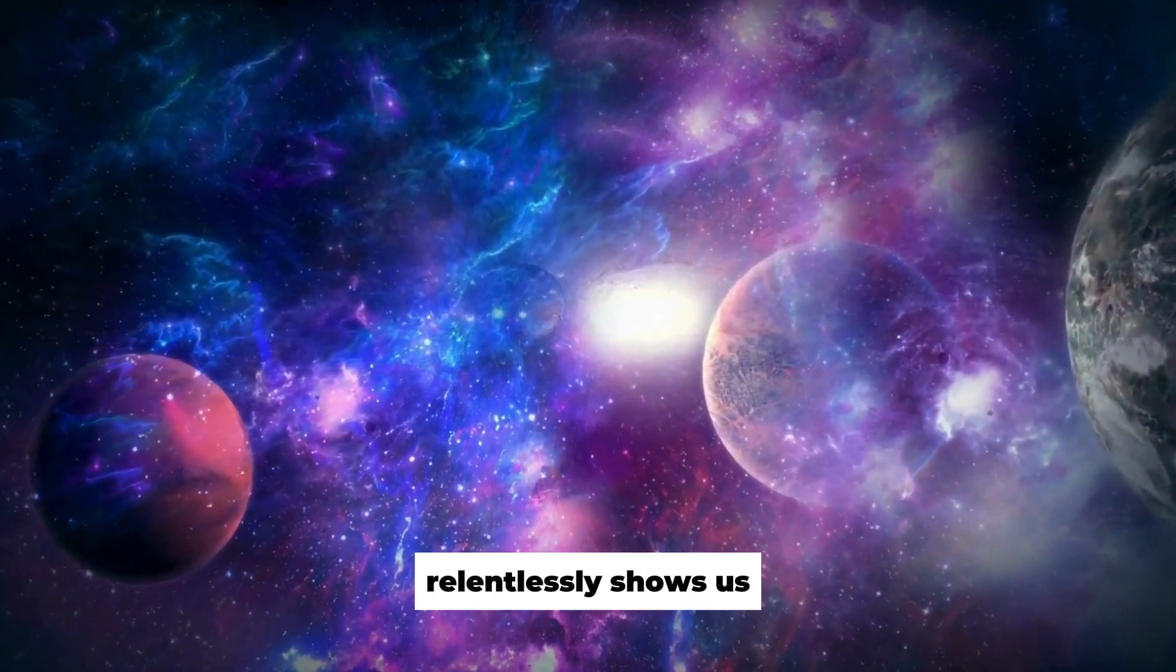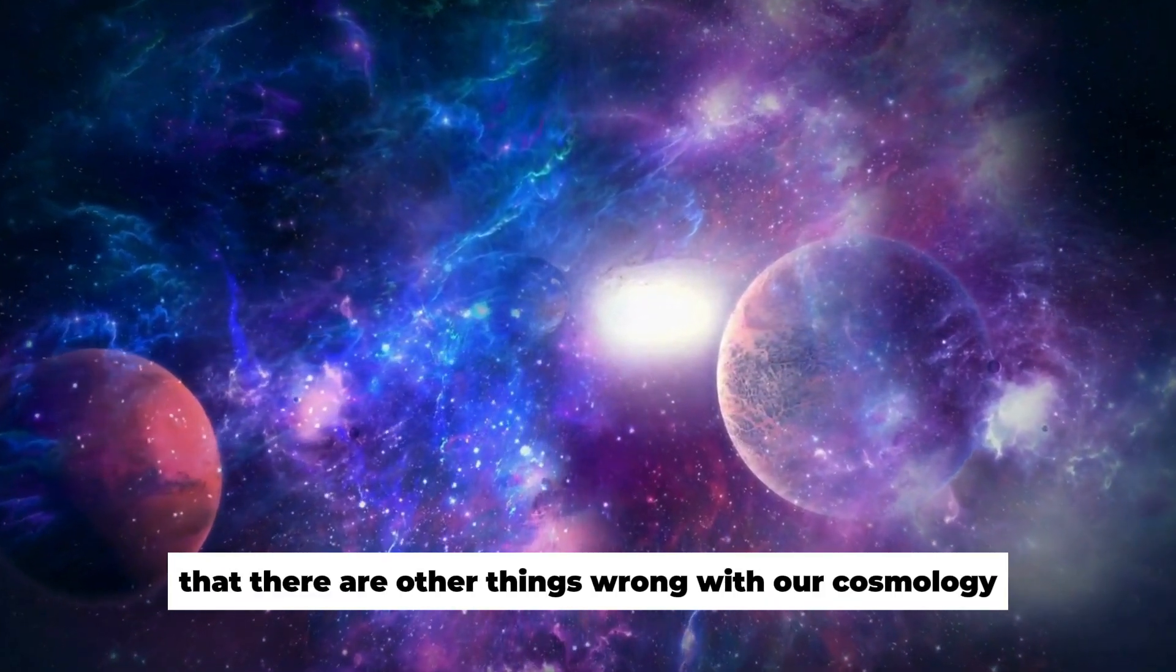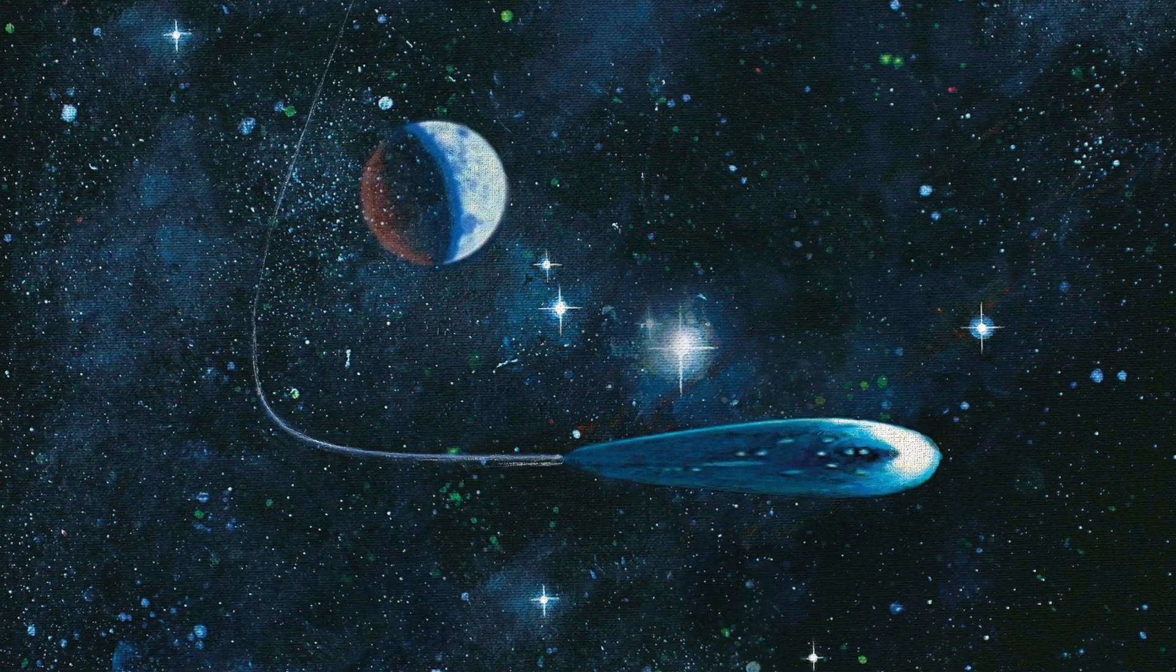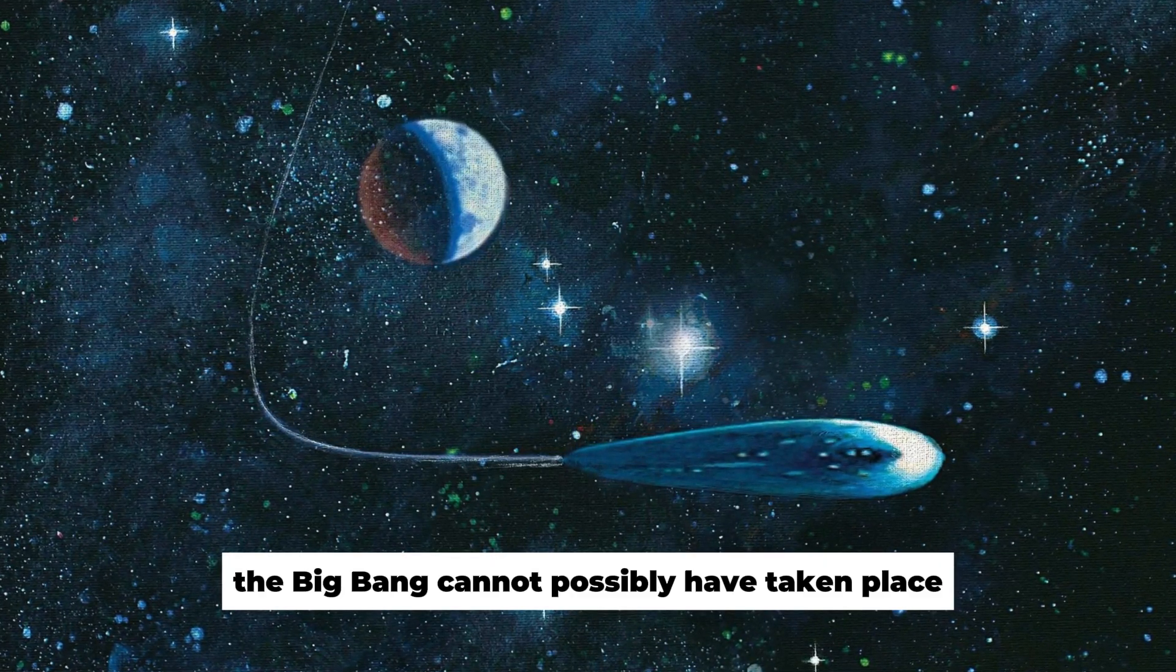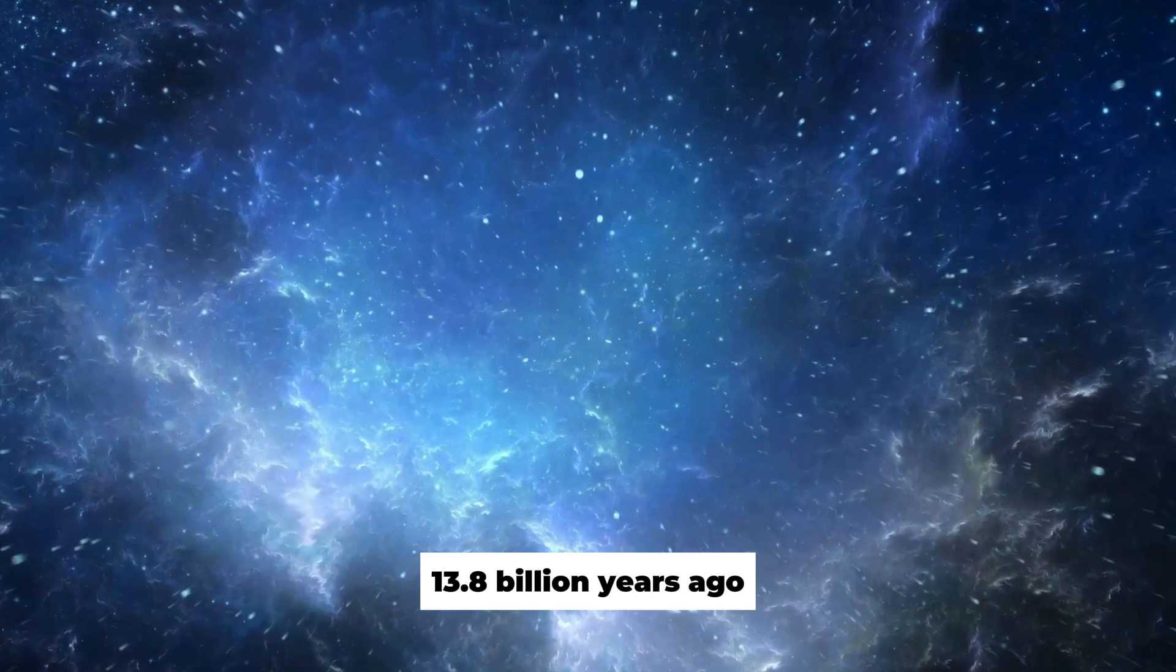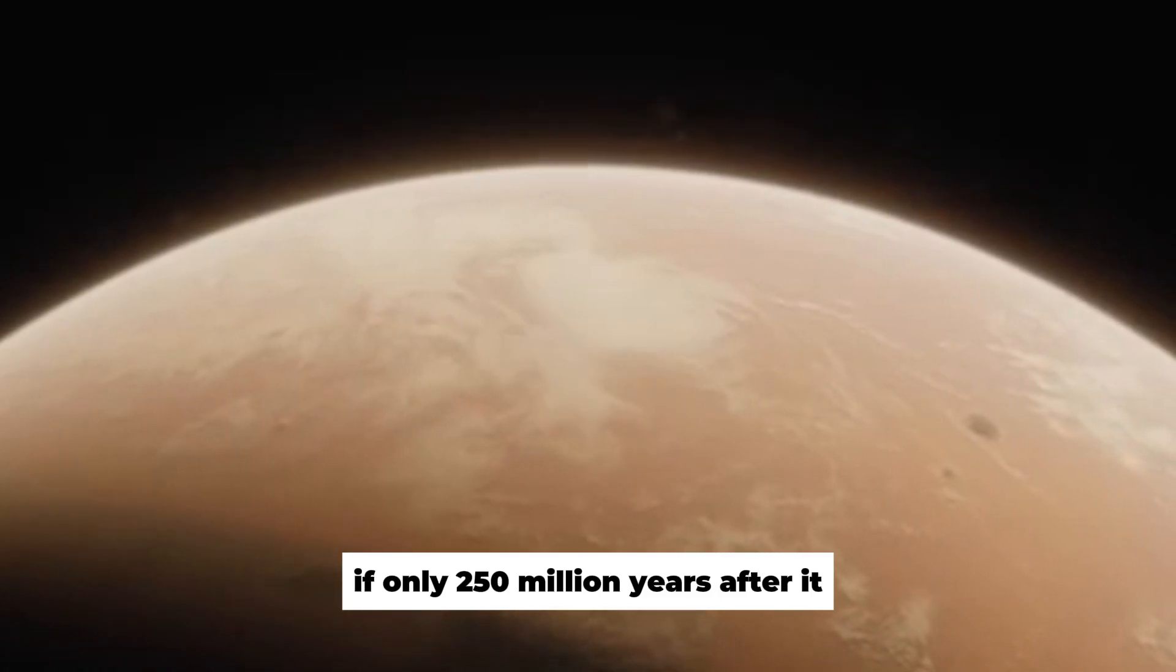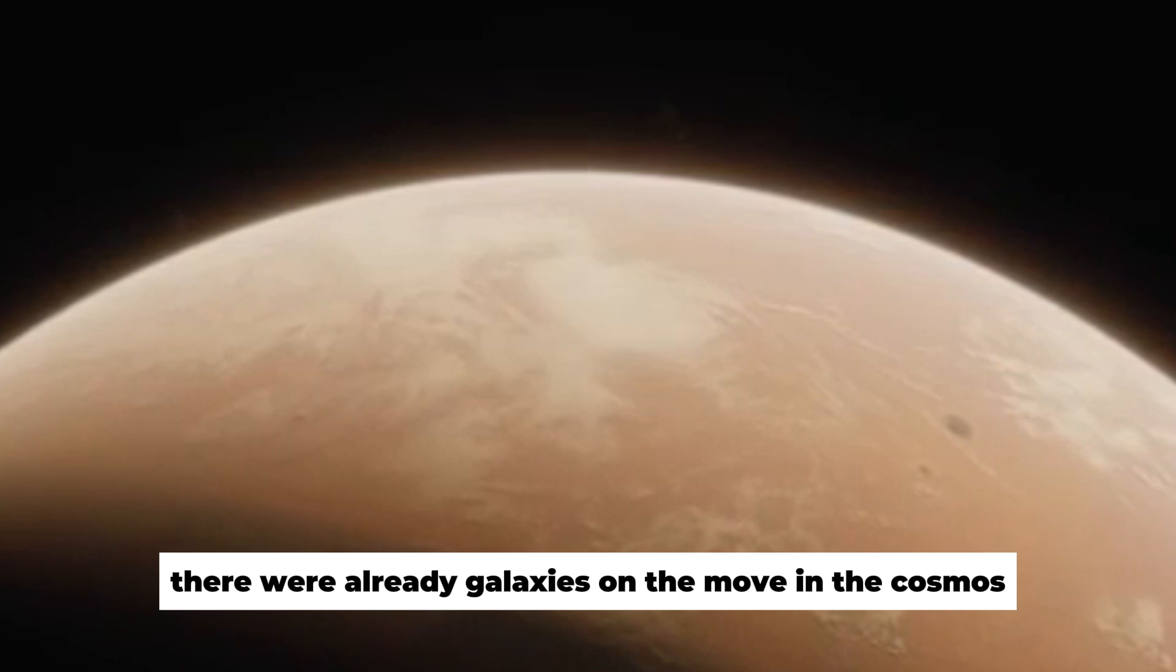Webb relentlessly shows us that there are other things wrong with our cosmology and astrophysics. We may have been wrong on many levels. The Big Bang cannot possibly have taken place 13.8 billion years ago if only 250 million years after it there were already galaxies on the move in the cosmos.